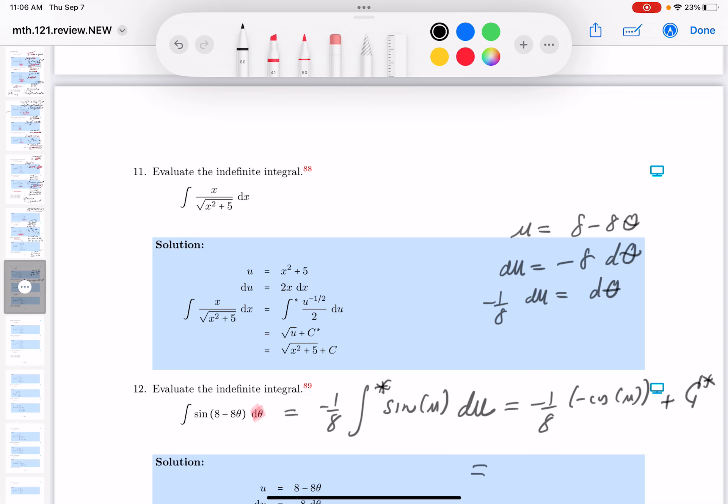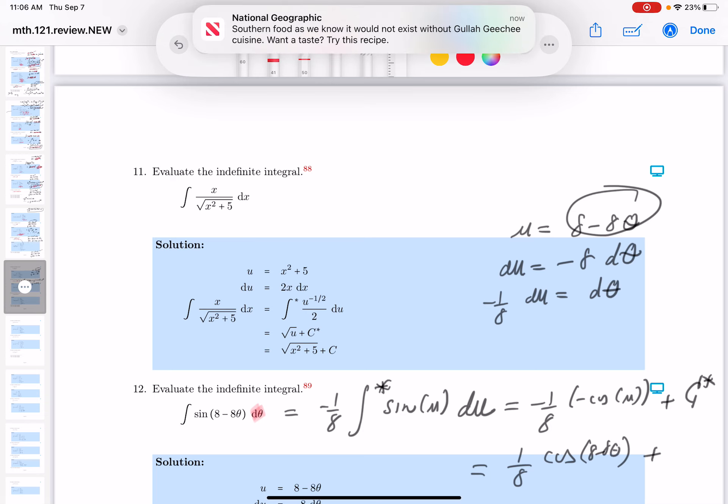Let's keep moving along. There's going to be 1 eighth of a cosine. What's U? It's right over here. It's 8 minus 8 theta plus C.